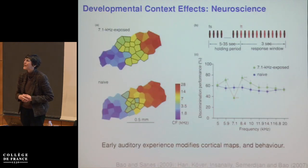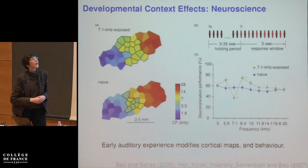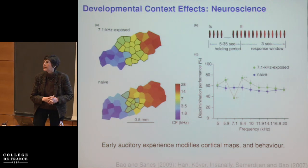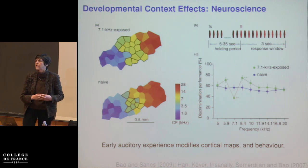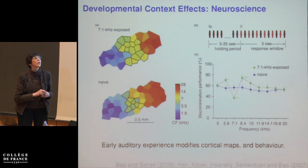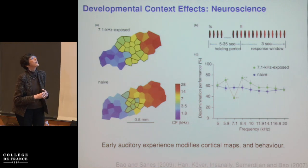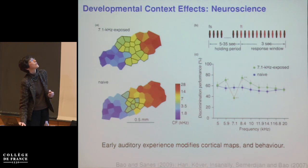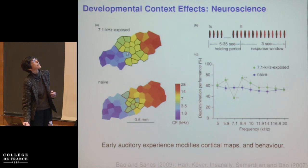What's the neuroscientific basis for making that kind of claim? There's lots of evidence from many labs that developmental experience can shape the responses of neurons in the cortex. This is just one example from the work of Shao and Bao. This slide shows cortical maps for two rats — a map of sound frequency across the cortical surface, where the color of each polygon represents the preferred sound frequency of neurons recorded at that location.